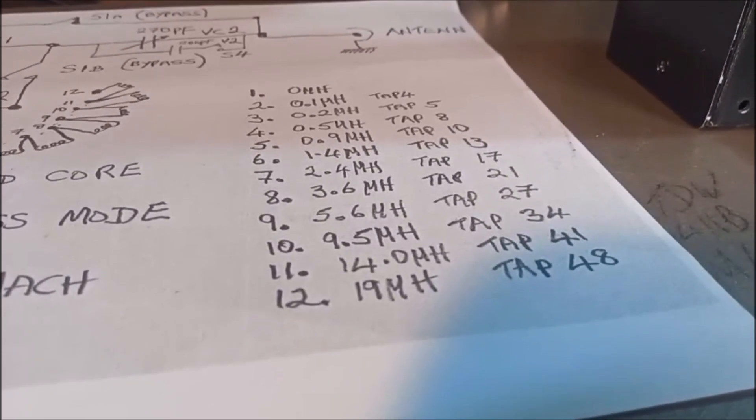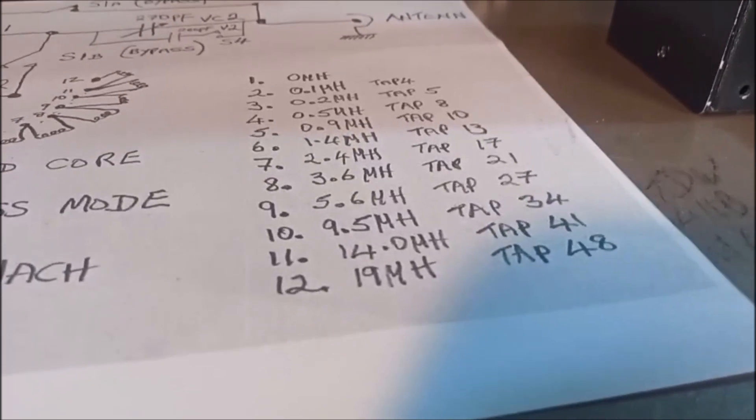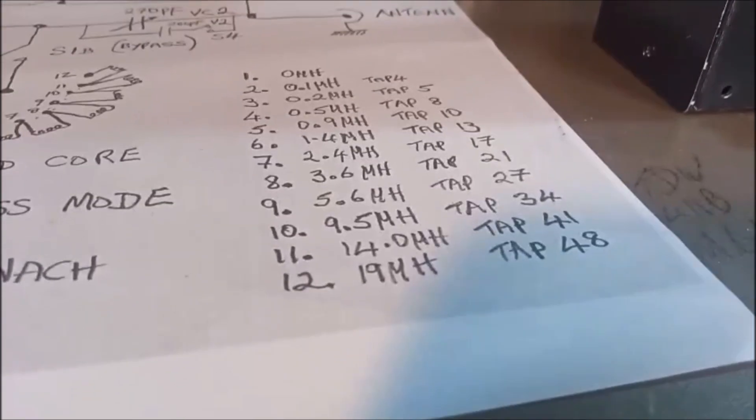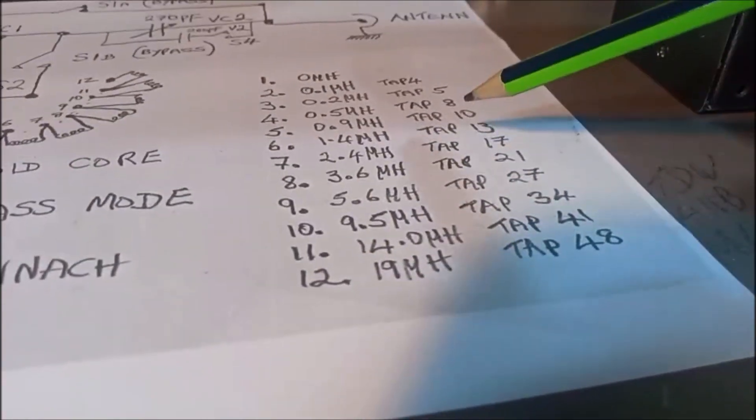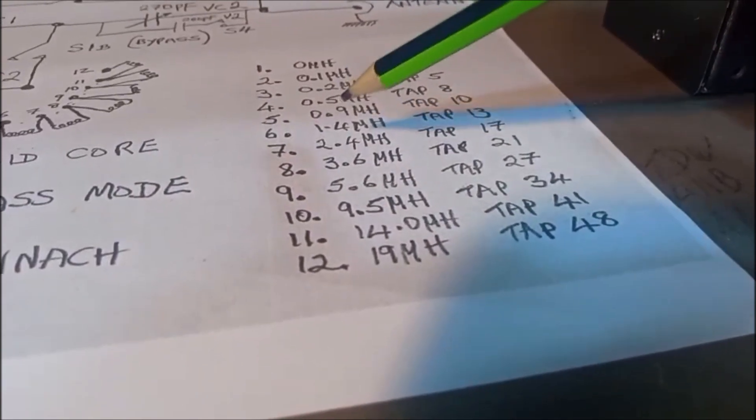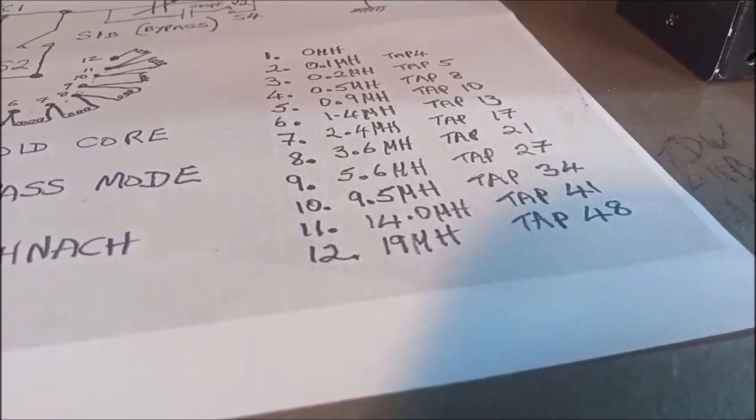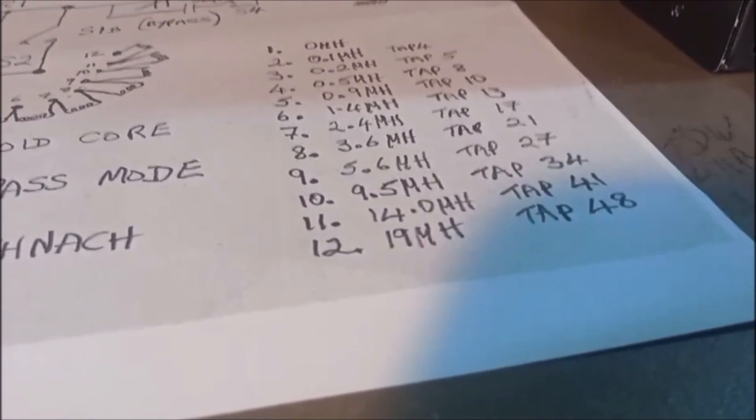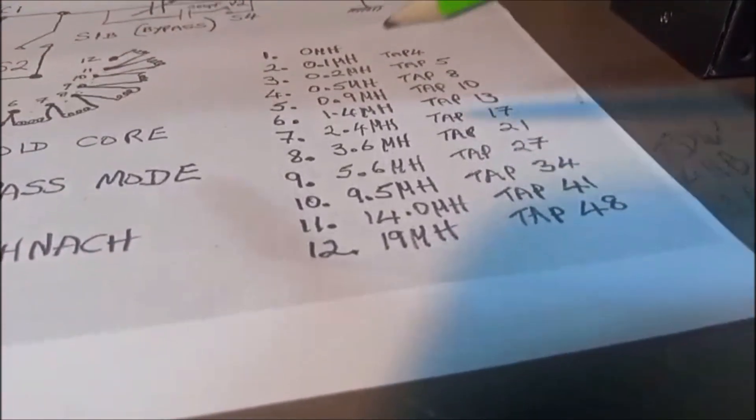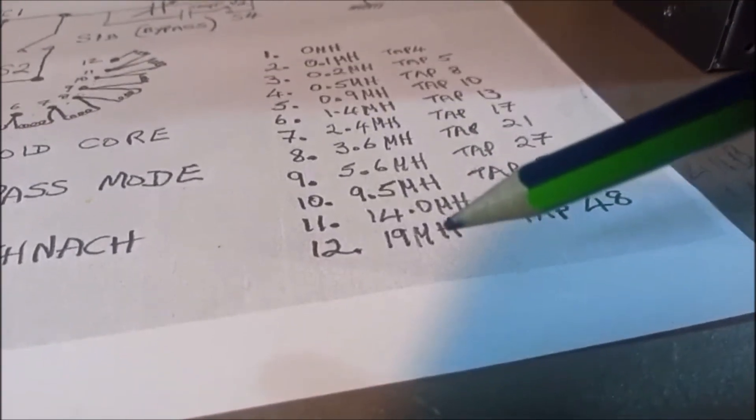In my own case, what I did was I went straight in on the first tap. I selected nine as the first tap. I didn't go with these 0.1, 0.2, 0.5, and that allowed me to make the larger inductances closer to each other.